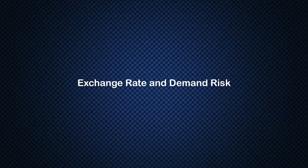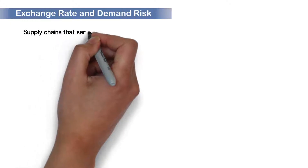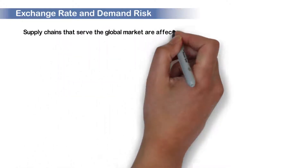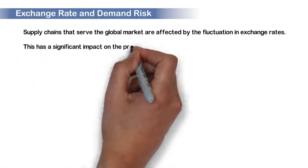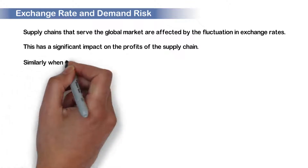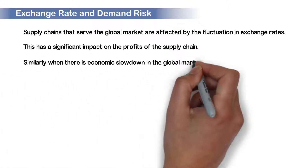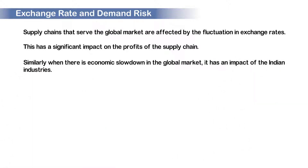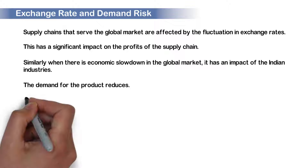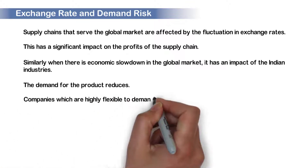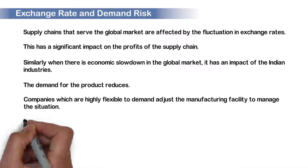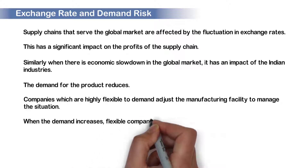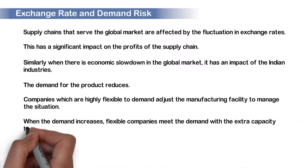Similarly, exchange rate and demand risk have an influence on the location decision. Supply chains that serve the global market are affected by the fluctuation in exchange rates, which has a significant impact on the profits of the supply chain. Similarly, when there is an economic slowdown in the global market, it has an impact on Indian industries and the demand for the product reduces. Companies which are highly flexible to the demand adjust the manufacturing facility to manage the situation. When the demand increases, flexible companies meet the demand with the extra capacities they can create.